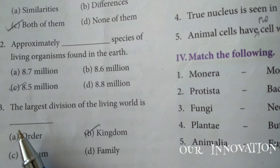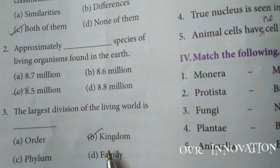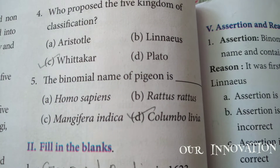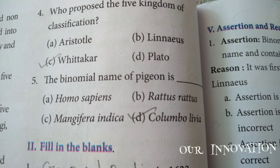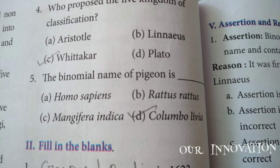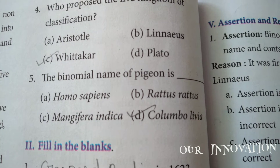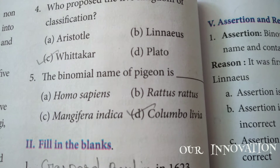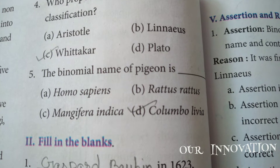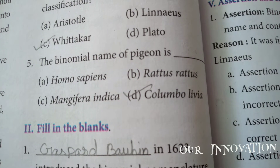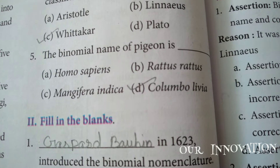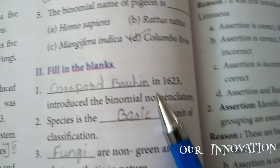Third question: the largest division of the living world is kingdom. Fourth: who proposed the five kingdom classification? Wittaker proposed it, so answer C, Wittaker, is correct. Fifth: the binomial name of pigeon is Columba livia - answer D is the right answer.